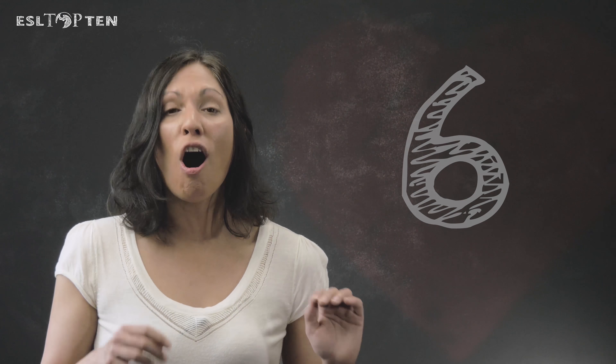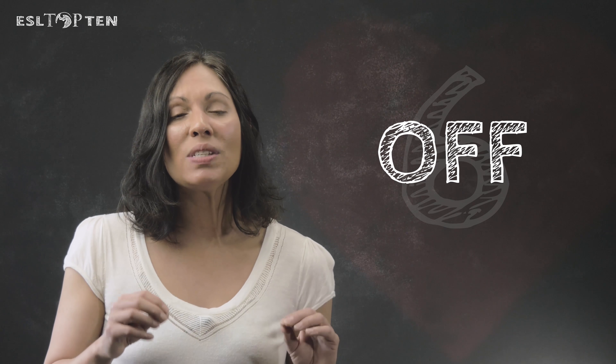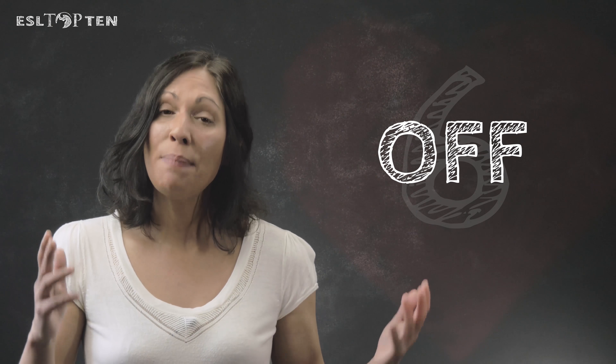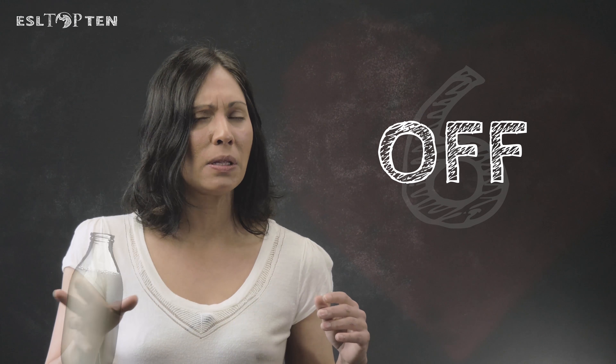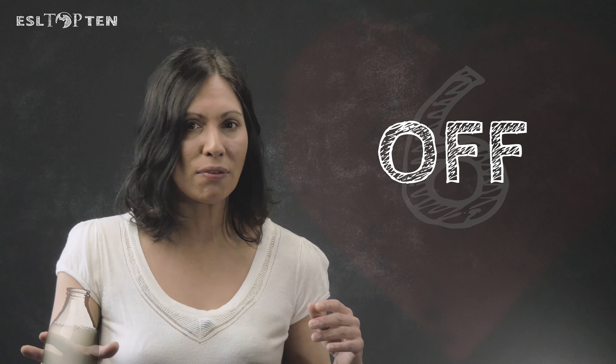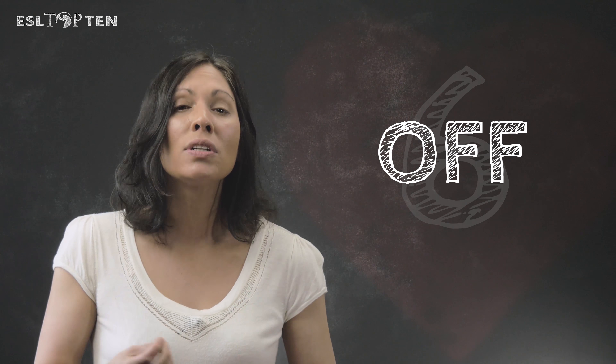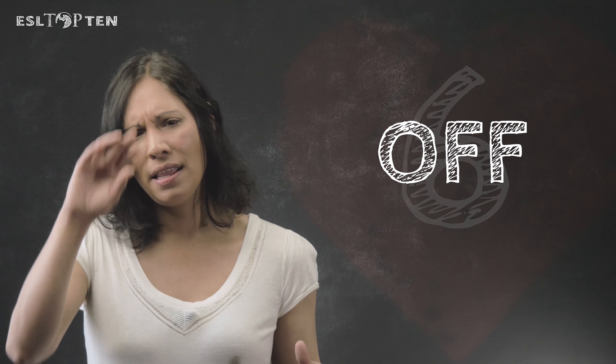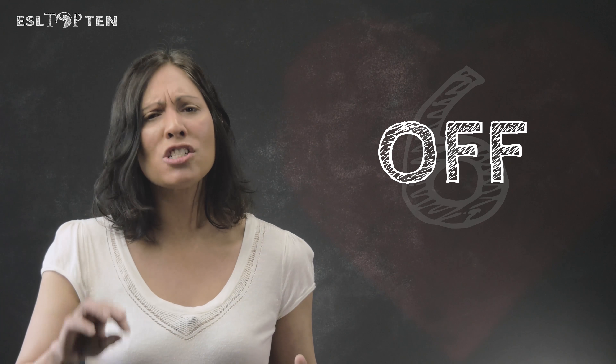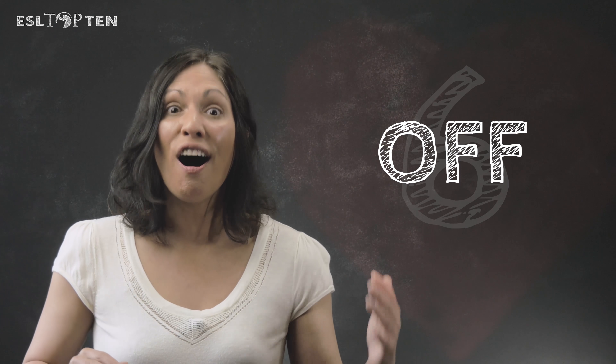Number six: off. Off here, even though it's usually a preposition, is used as an adjective. Off also means bad. We use this to talk about food — oh, I think this milk has gone off, or it's off. I can also use it to describe my physical condition: I'm just feeling a little off today, I think I've got a fever, maybe I should go home. To be off.